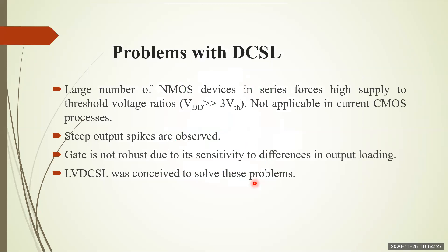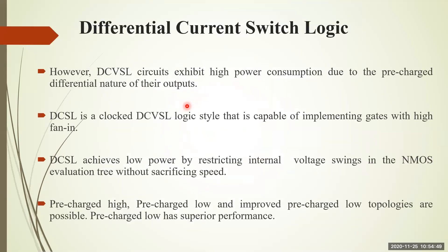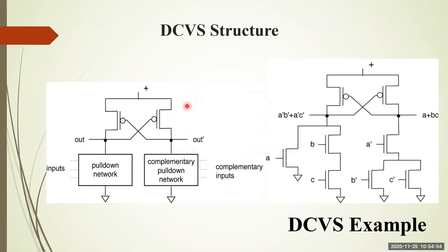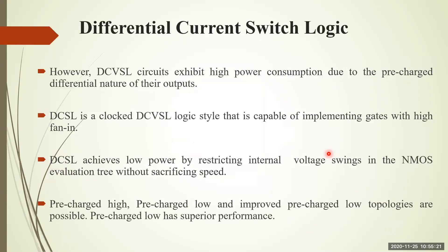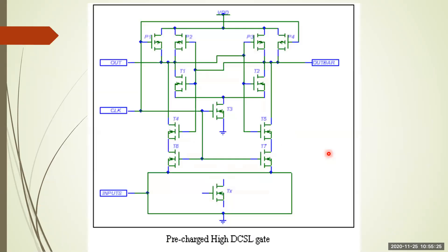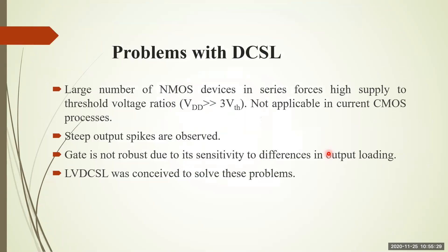A problem with DCSL logic is that a large number of NMOS devices are used in series, which forces high supply-to-threshold voltage ratios — meaning VDD must be much greater than three times the threshold voltage of the NMOS device. When many N-transistors are used in series for different functionalities, a larger VDD is required, which leads to higher power consumption.